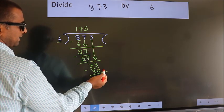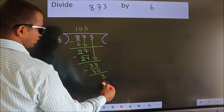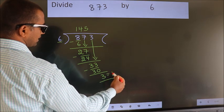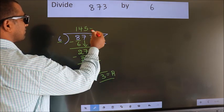No more numbers to bring it down. So, we stop here. This is our remainder. This is our quotient.